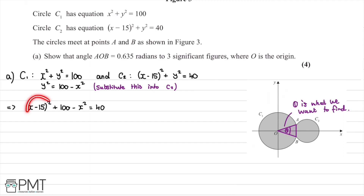Expanding the brackets, we get x squared minus 30x plus 225 plus 100 minus x squared equals 40. Tidying this up, the x squared terms cancel, leaving negative 30x equals 40 minus 225 minus 100, which gives negative 30x equals negative 285. Multiplying both sides by minus 1 gives 30x equals 285.